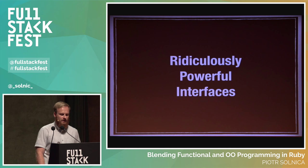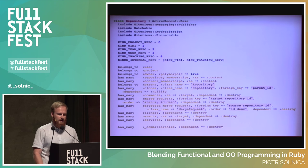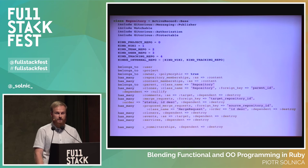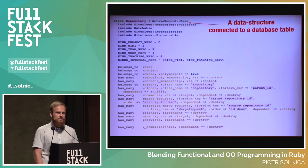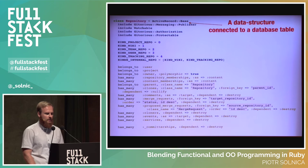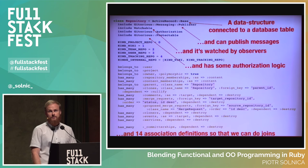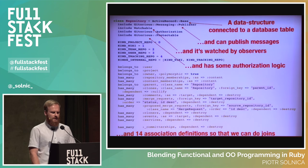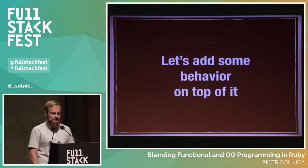Then we started seeing things like a repository ActiveRecord object — it's from a real project. I realized this is a data structure connected to a database, which is already pretty complicated. We use mixins in Ruby for everything, and mixins is just multiple inheritance. We keep adding more and more, defining 14 associations — a lot of complexity — and then adding more behavior on top of it.